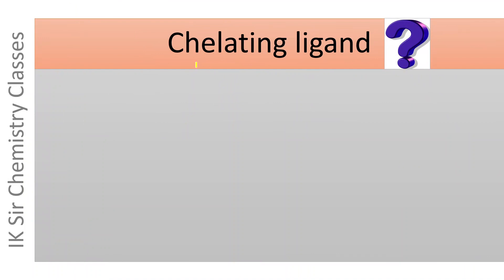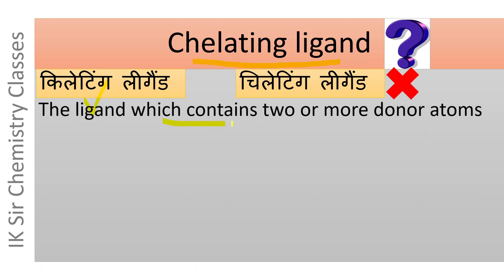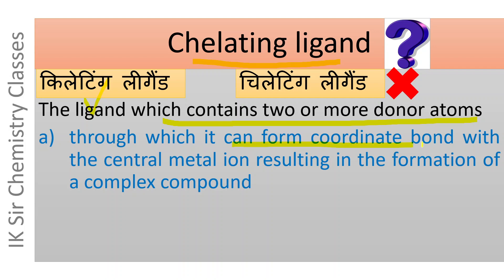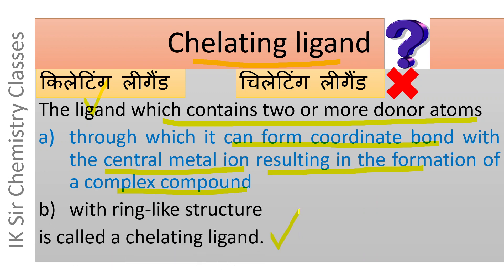But first of all, let us see what is chelating ligand. It must be noted that its correct pronunciation is chelating ligand and not chelating ligand. The ligand which contains two or more donor atoms or donor sites through which it can form coordinate bond with the central metal ion, resulting in the formation of a complex compound with ring-like structure, is called a chelating ligand.